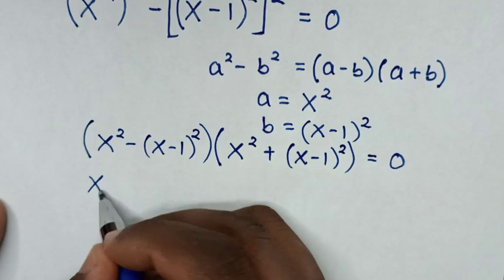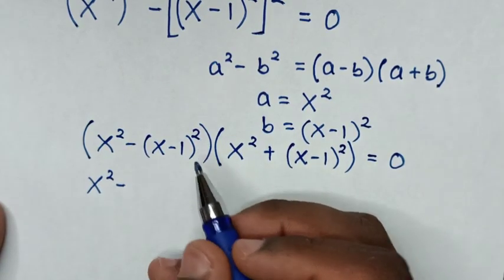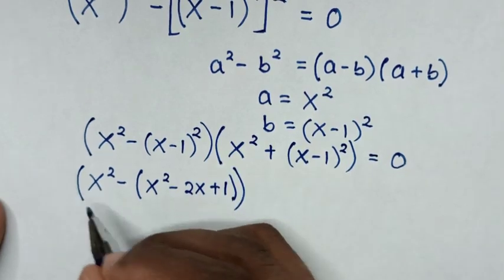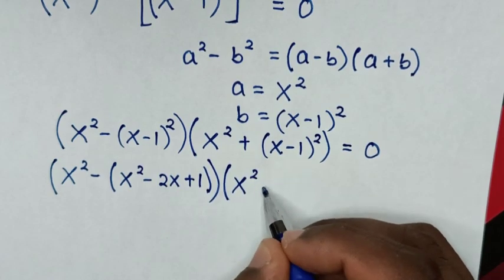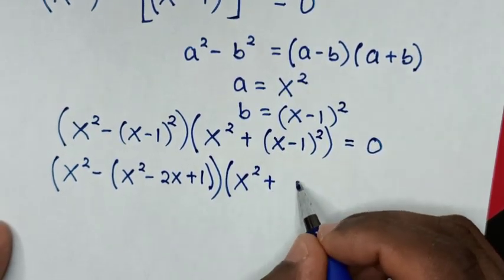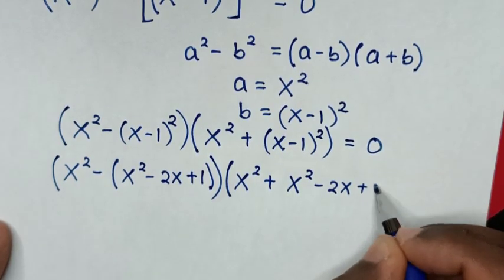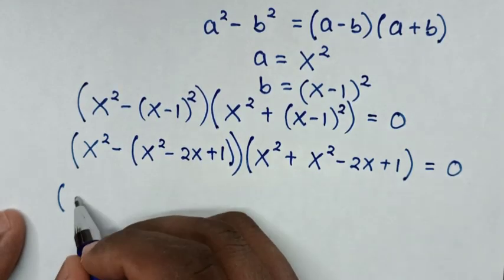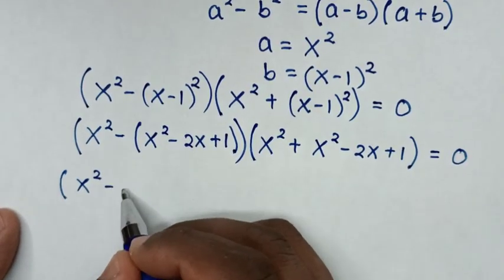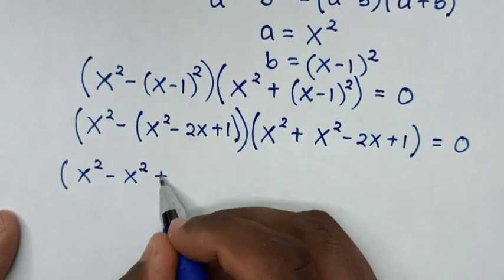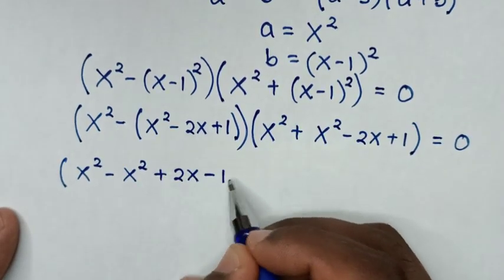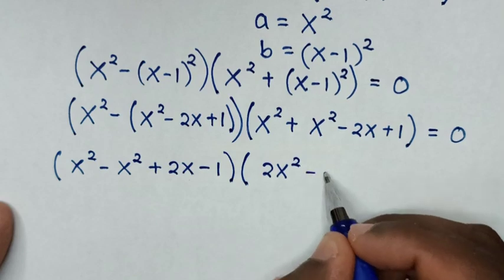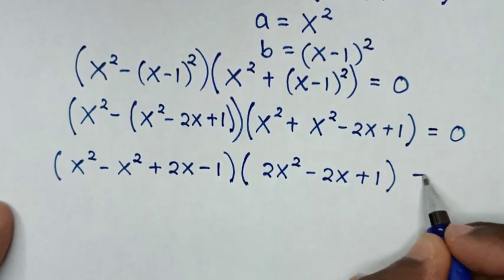Expanding: x squared minus (x squared minus 2x plus 1), and x squared plus (x squared minus 2x plus 1). Distributing the negative: x squared minus x squared plus 2x minus 1 gives 2x minus 1. The second bracket becomes 2x squared minus 2x plus 1. So we have (2x minus 1)(2x squared minus 2x plus 1) equals 0.